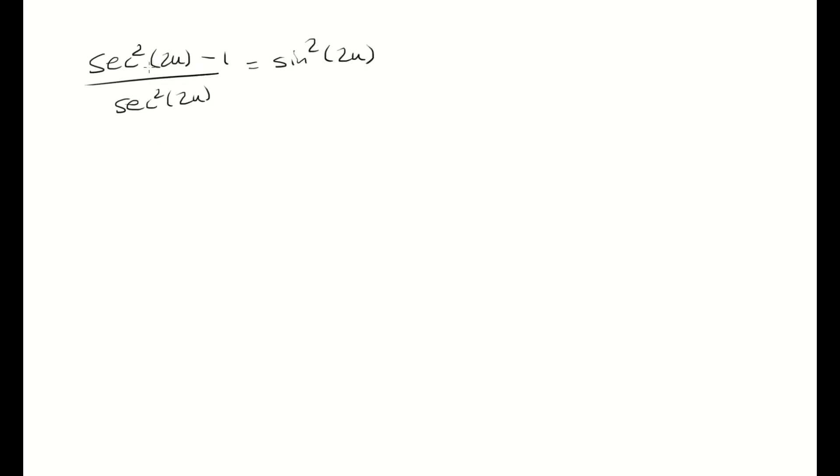Notice that this is a fraction. The numerator has two terms, so why don't we split it up into two separate fractions. Each of the fractions has a common denominator of secant squared 2u.